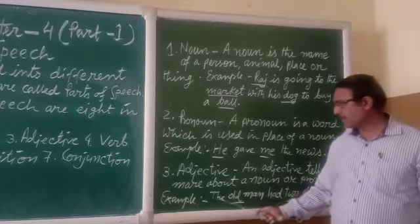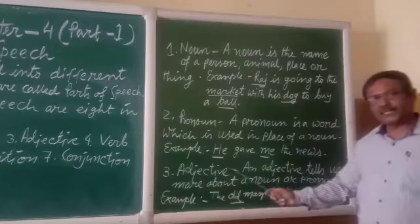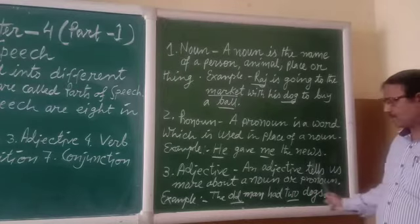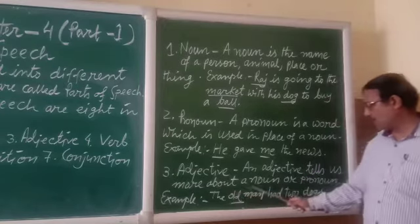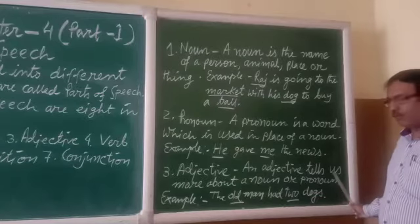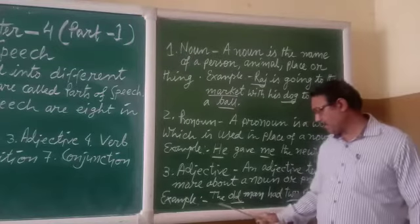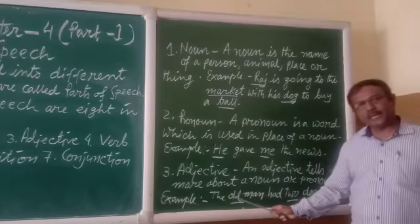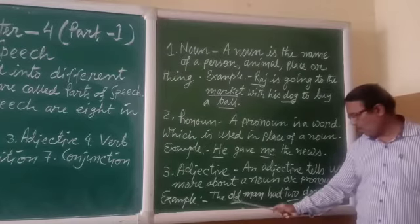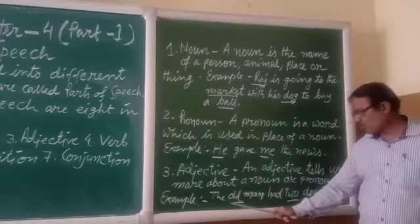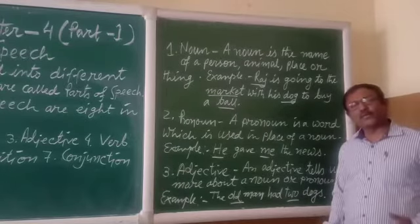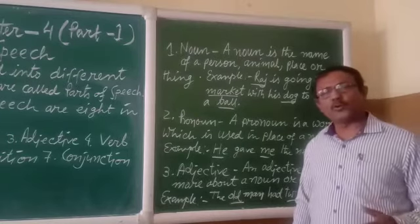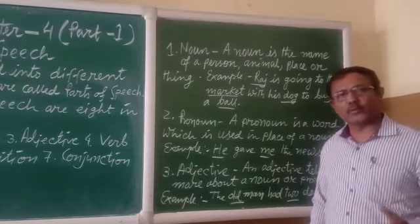Next one is adjective. What is adjective? The definition of the adjective is: an adjective tells us more about a noun or pronoun. One example is here: the old man had two dogs. I have given the underlines — old and two. These two words are adjectives. I hope that you have understood. If you have any doubt, you can ask me. Now I am going to give you some classwork which you have to do in the rough book.